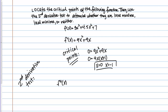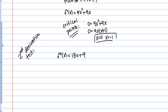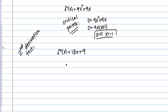We have to start by taking the second derivative. For our function, the second derivative f''(x) = 18x + 9. The second derivative test tells us to evaluate this at the critical points. Starting with x = 0, we evaluate f''(0) by plugging in 0, and we get 9.